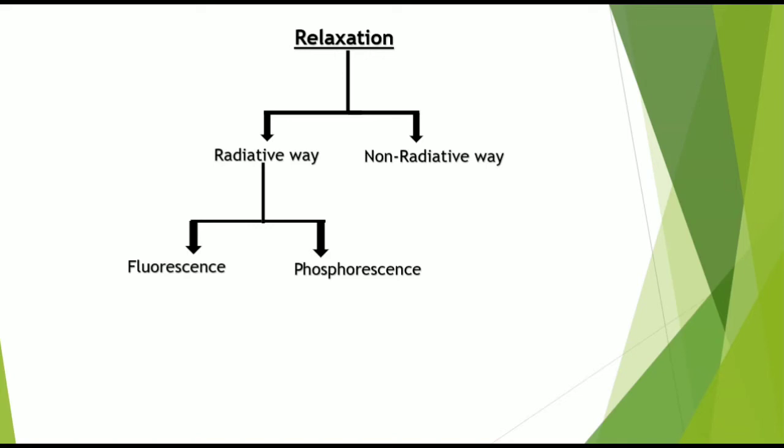In the radiative way, it occurs by two mechanisms: the first one is fluorescence and the second one is phosphorescence.